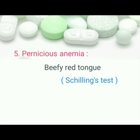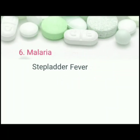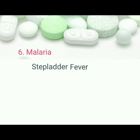Pernicious anemia: pathognomonic sign is beefy red tongue, Schilling's positive test. Malaria: pathognomonic sign is stepladder fever.